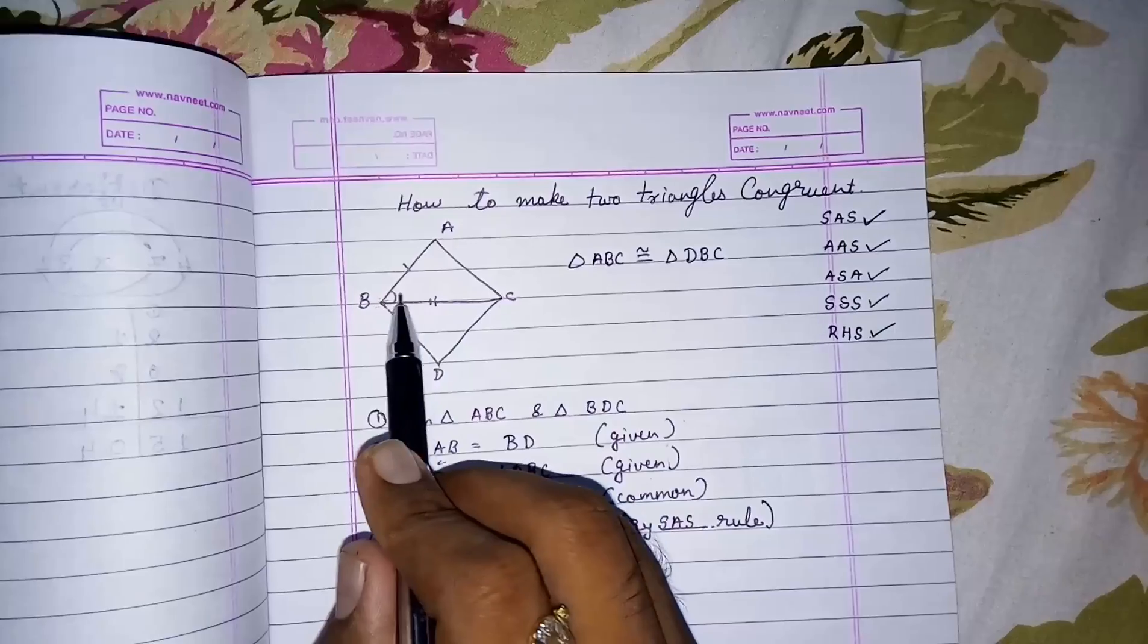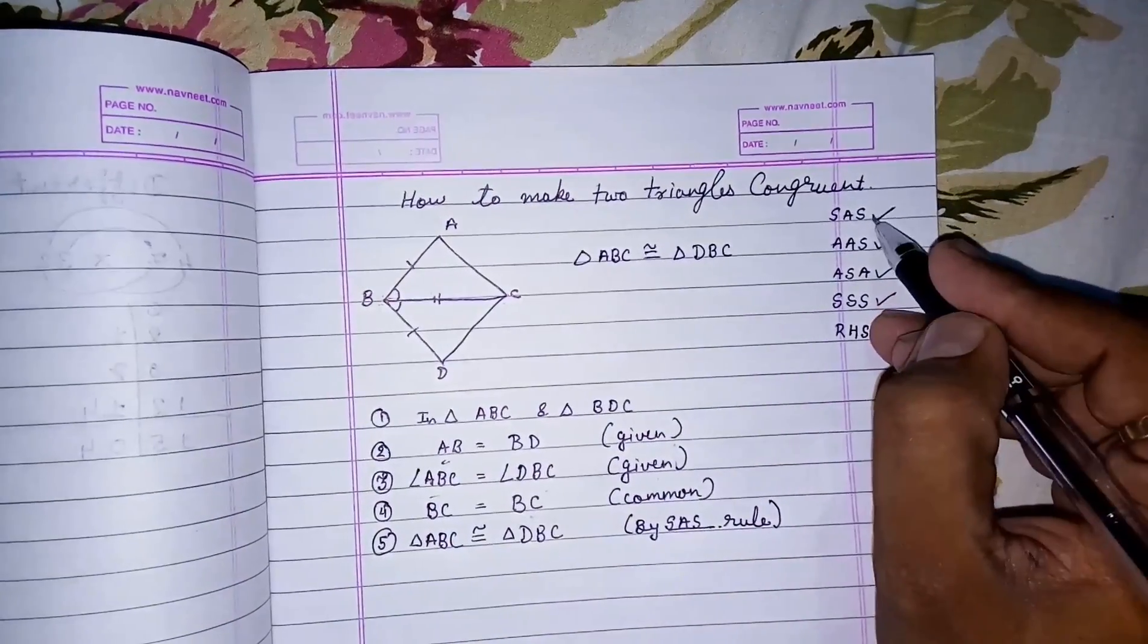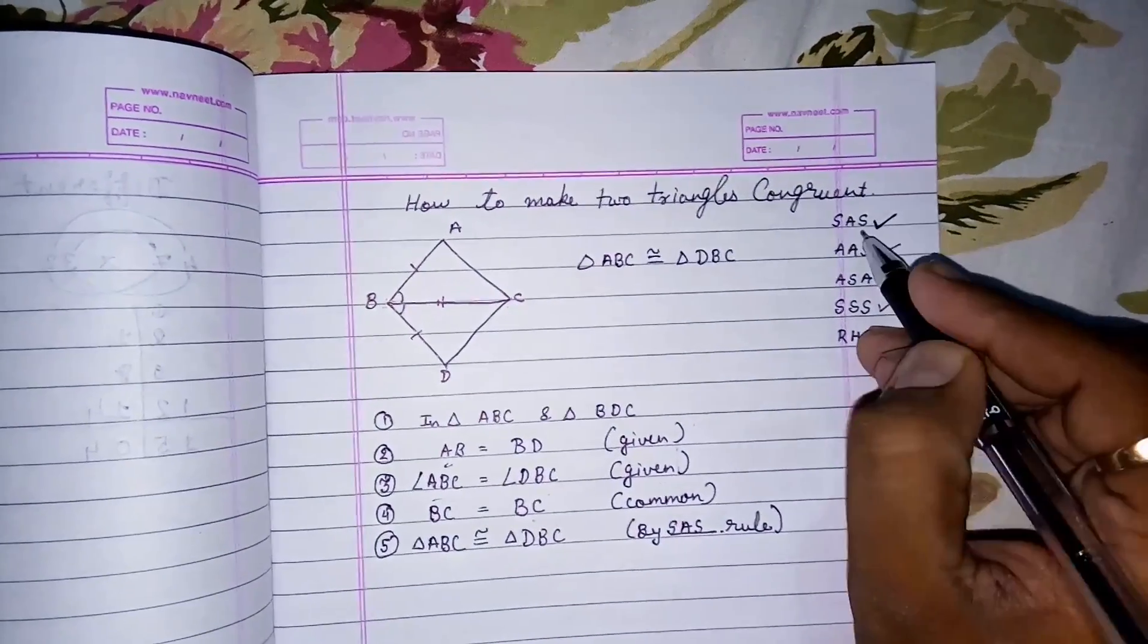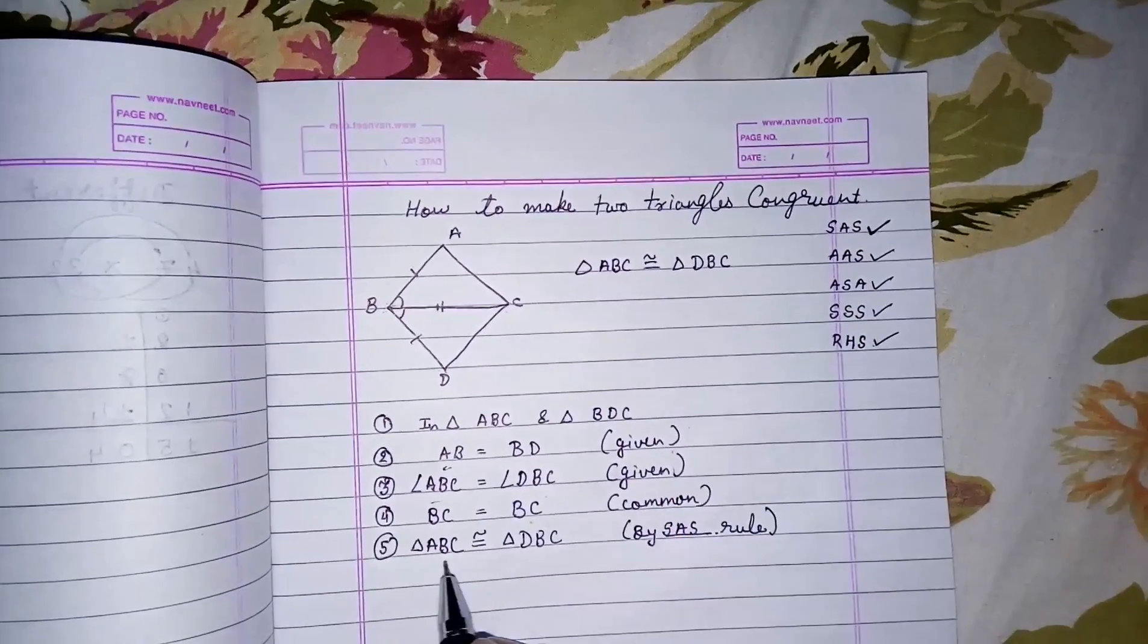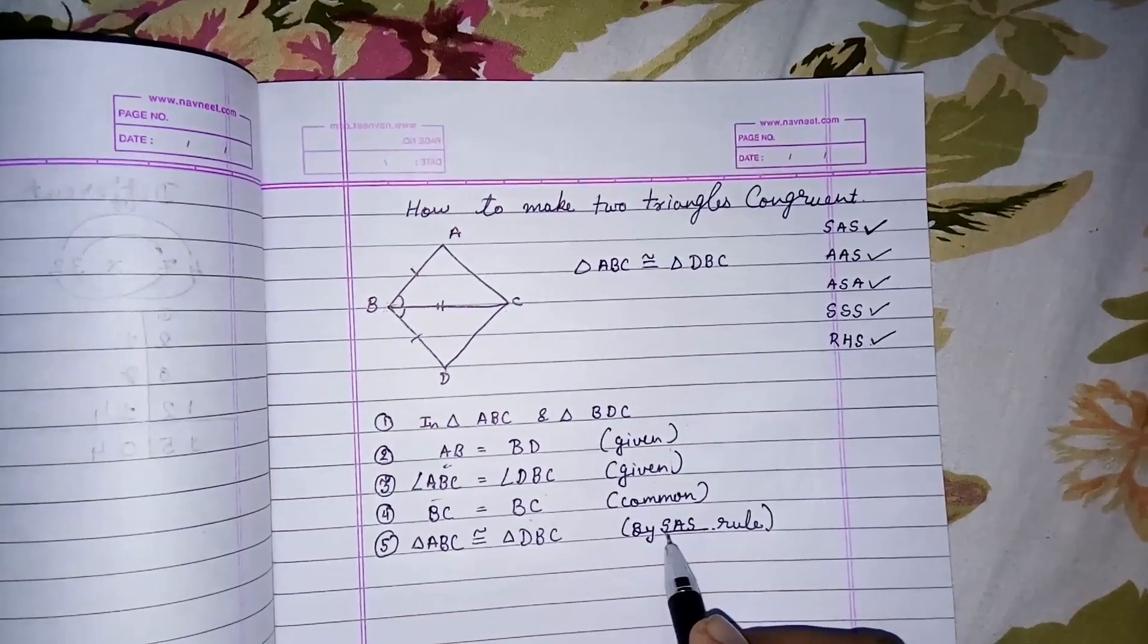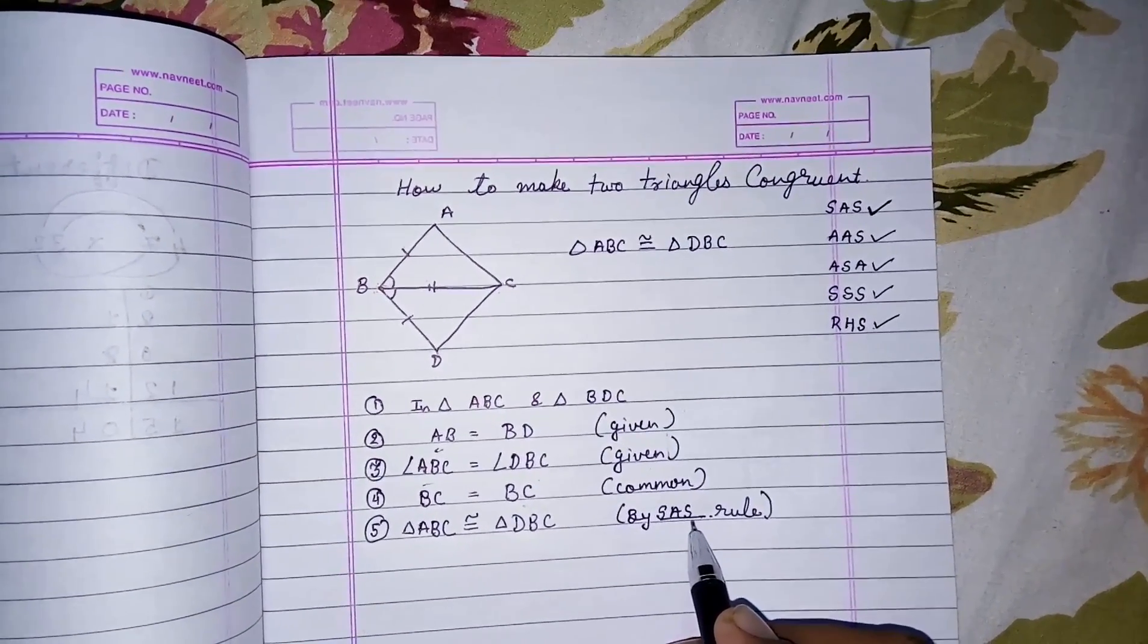So here we have side and angle between them, so we are going to use the side angle side rule. The triangles are congruent by the rule side angle side.